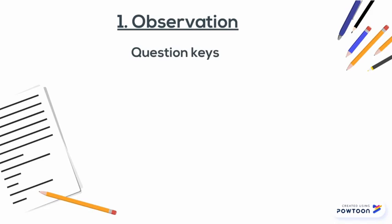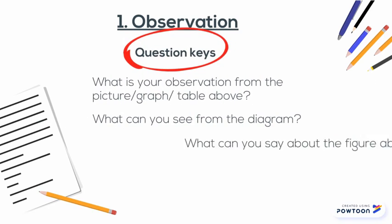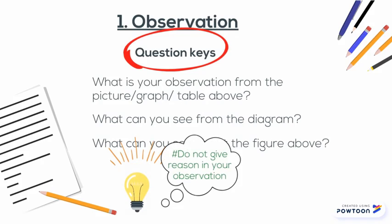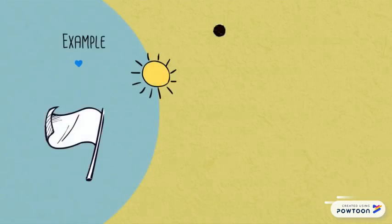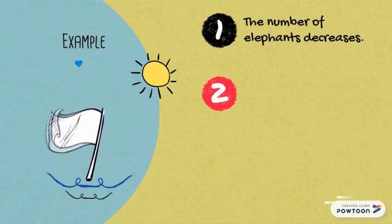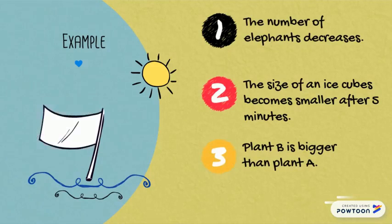First, an observation. You must find out the question keys in the question. Tips: do not give a reason in your observation. For example, the number of elephants decreases, the size of an ice cube becomes smaller after 5 minutes, and plant B roots faster than plant A.